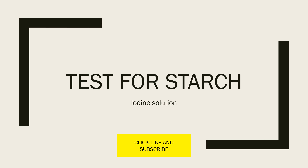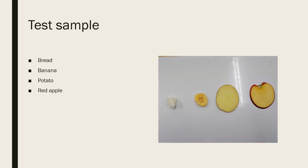Test for starch. Our reagent or solution that we are going to use is iodine. The substances or test samples that we are going to test are bread, banana, potato, and red apple.